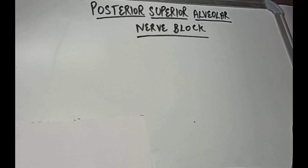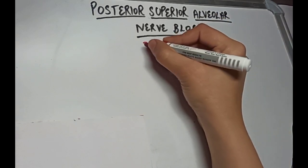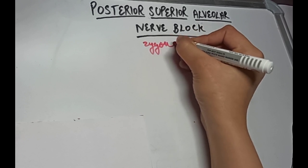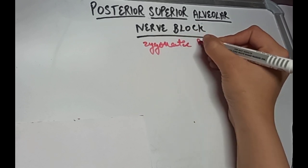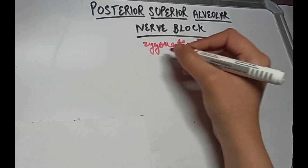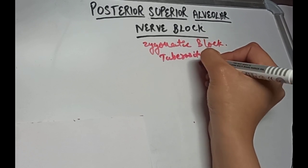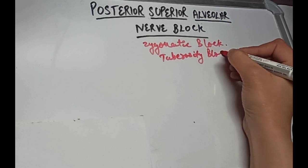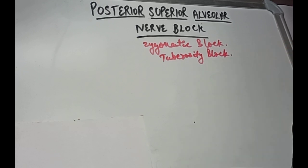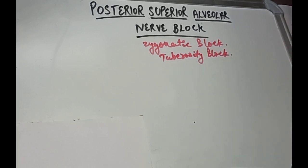Today's topic will be the posterior superior alveolar nerve block, which is also called the zygomatic block or tuberosity block. The PSA, that is the posterior superior alveolar, is the branch of the maxillary division of the trigeminal nerve, which is given off just before the maxillary nerve enters the infraorbital foramen.